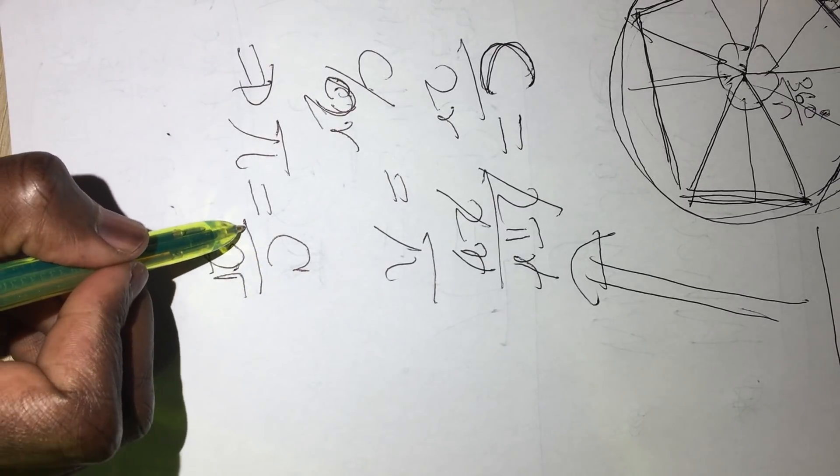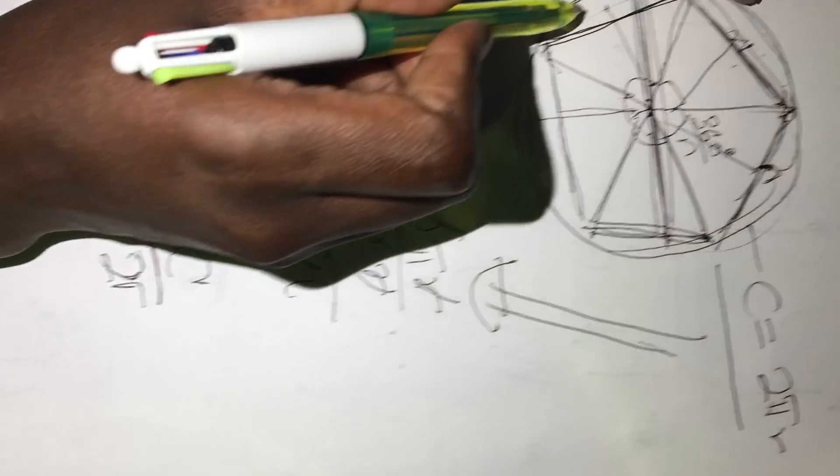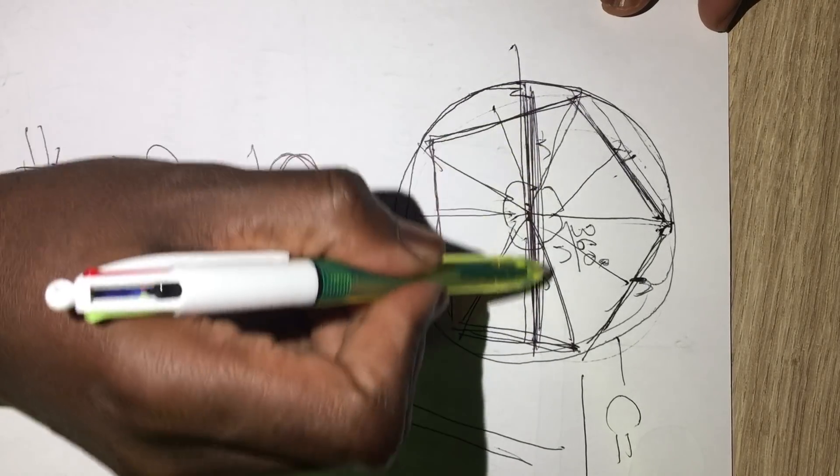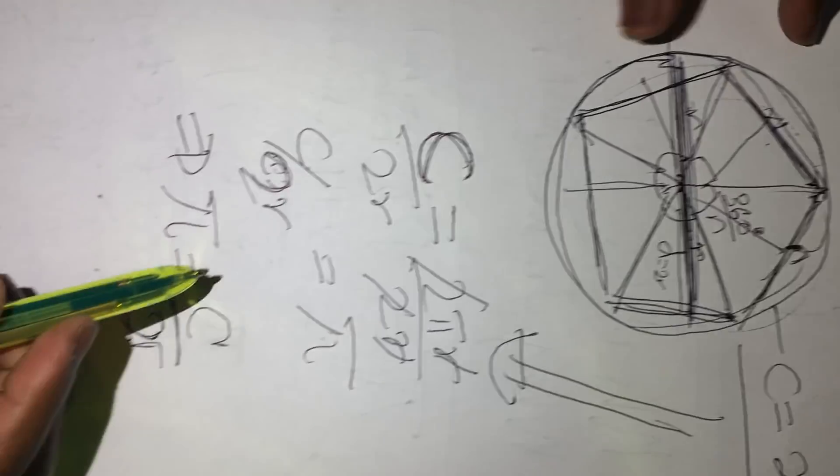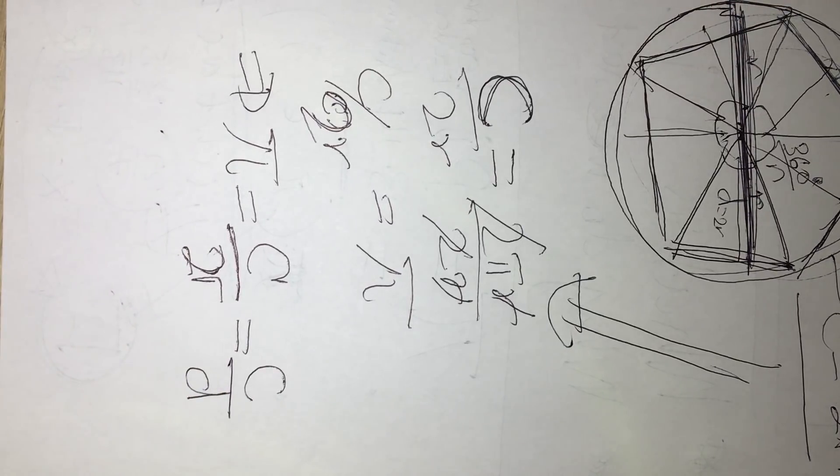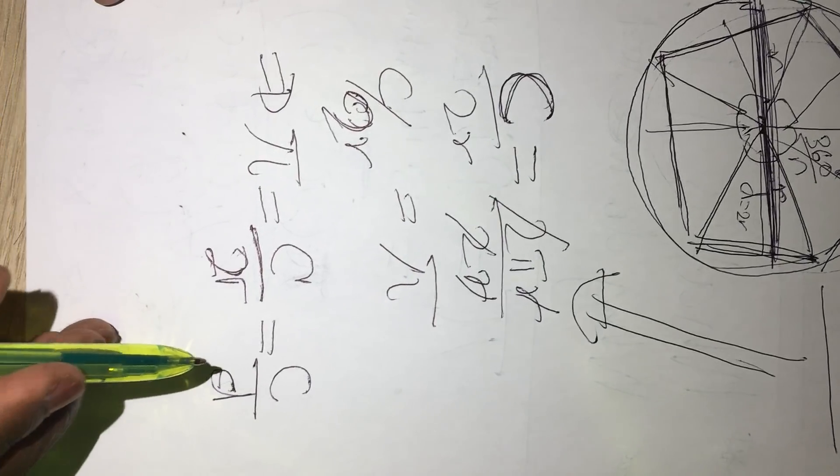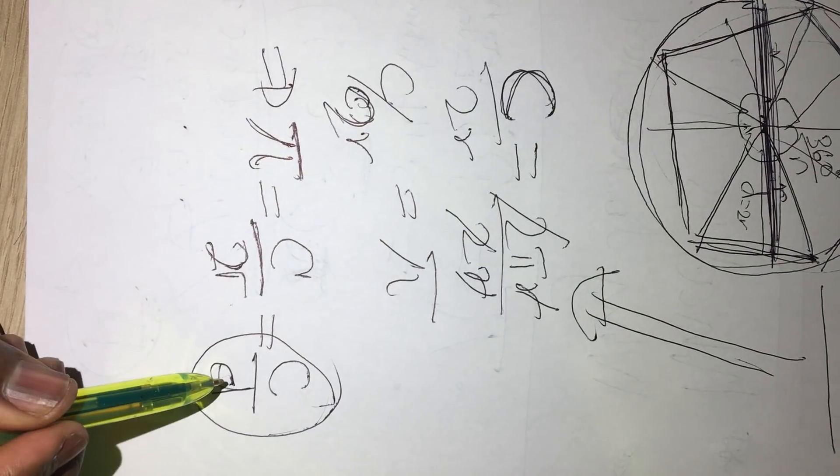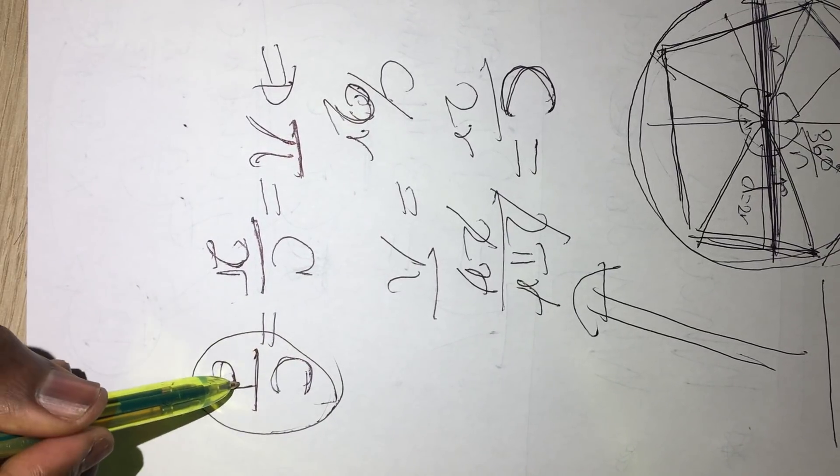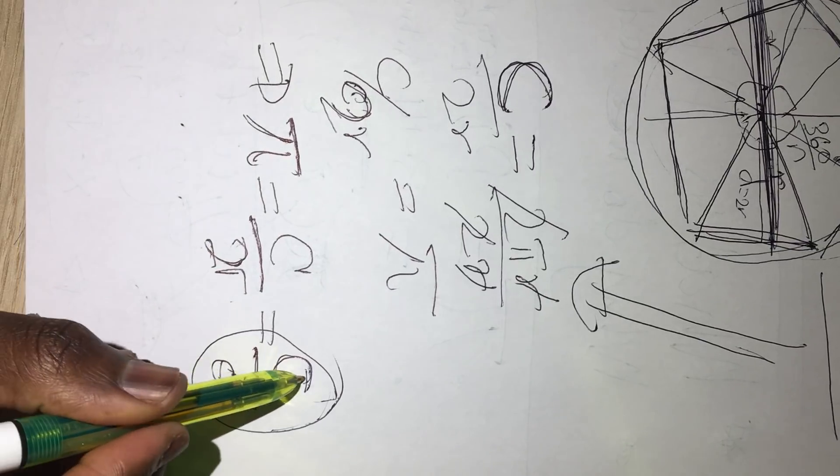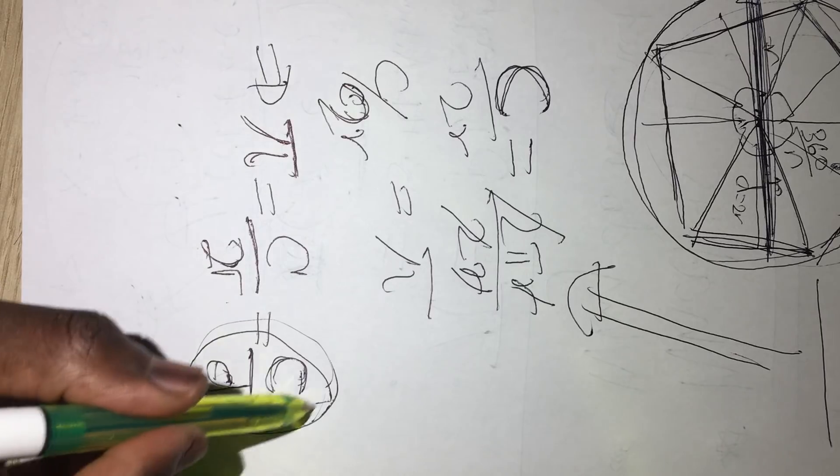So, this means that Pi actually is equal to the circumference of the circle divided by its diameter. So, this is the ratio of the circumference of the circle to the diameter, because the distance between one side of the circle, this distance here, is the diameter. Because the radius is there, the radius is there, adding the two gives us the diameter, which is 2R. So, Pi is equal to the circumference of the circle divided by the diameter. But what does this mean? What does it mean?